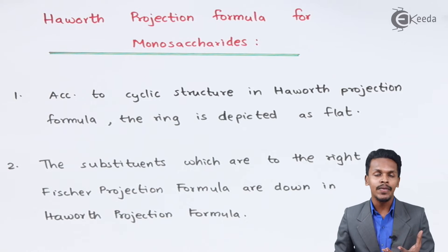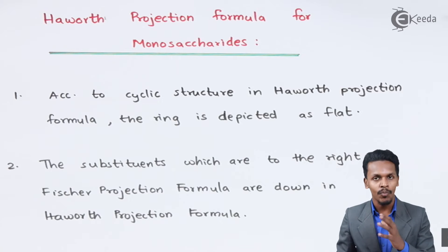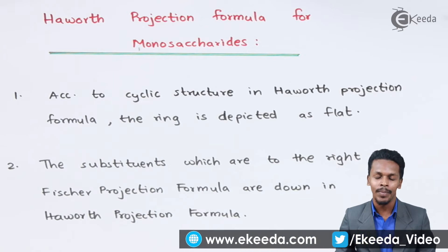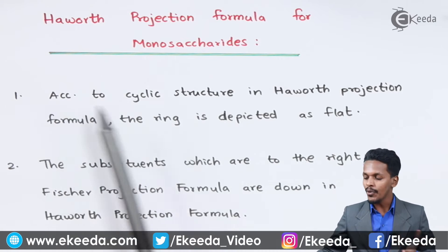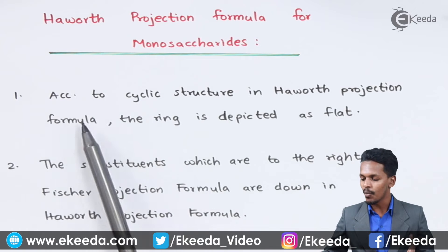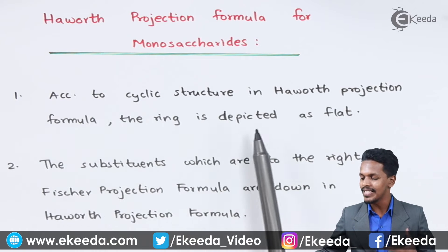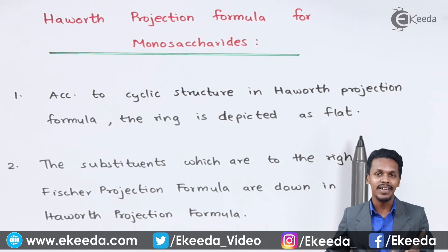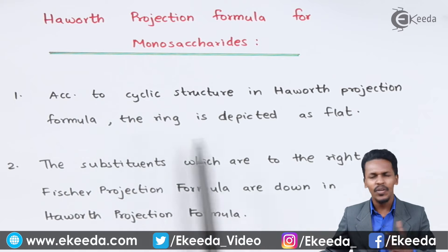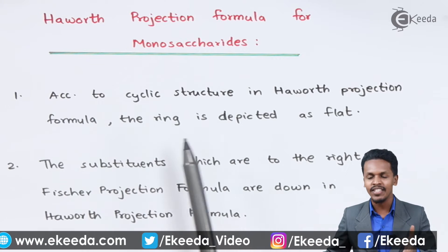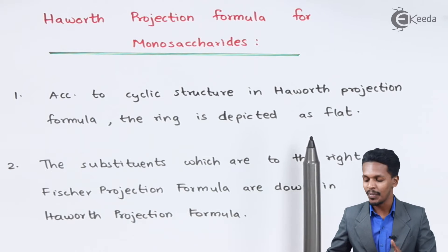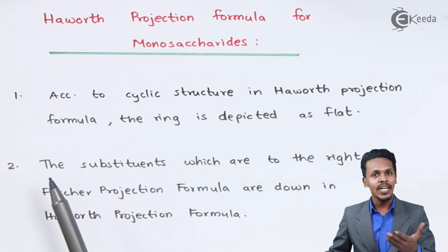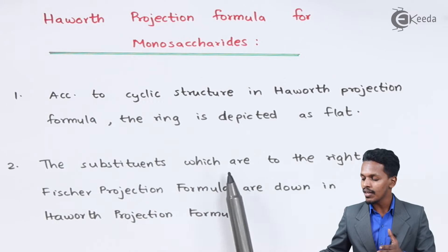In this topic I want to talk about the rules to give the Haworth projection formula of a monosaccharide from the Fischer projection formula. According to the cyclic structure in the Haworth projection formula, the ring is depicted as flat, but in actual practice it is not flat.